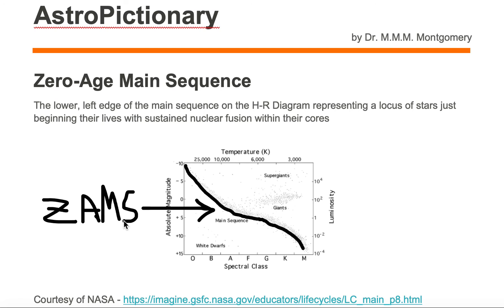What these ZAMS stars are, are stars that are just beginning their lives with sustained nuclear fusion. The stars along this ZAMS line are just beginning nuclear fusion and are ready to run their adult life with sustained nuclear fusion in their cores. They're not stars that are growing to become stars, and they're not stars that are dying. They're the first day of their adulthood. Hence we call this the zero age main sequence — we age the stars from this point, the zero age, the day they first begin their sustained nuclear fusion within their cores.